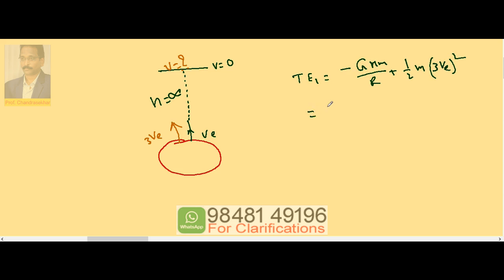So it is -GMm/R plus 3 squared, (9/2)m into 2GM/R. Escape velocity from the surface of the earth is √(2GM/R), so the square root gets cancelled here.